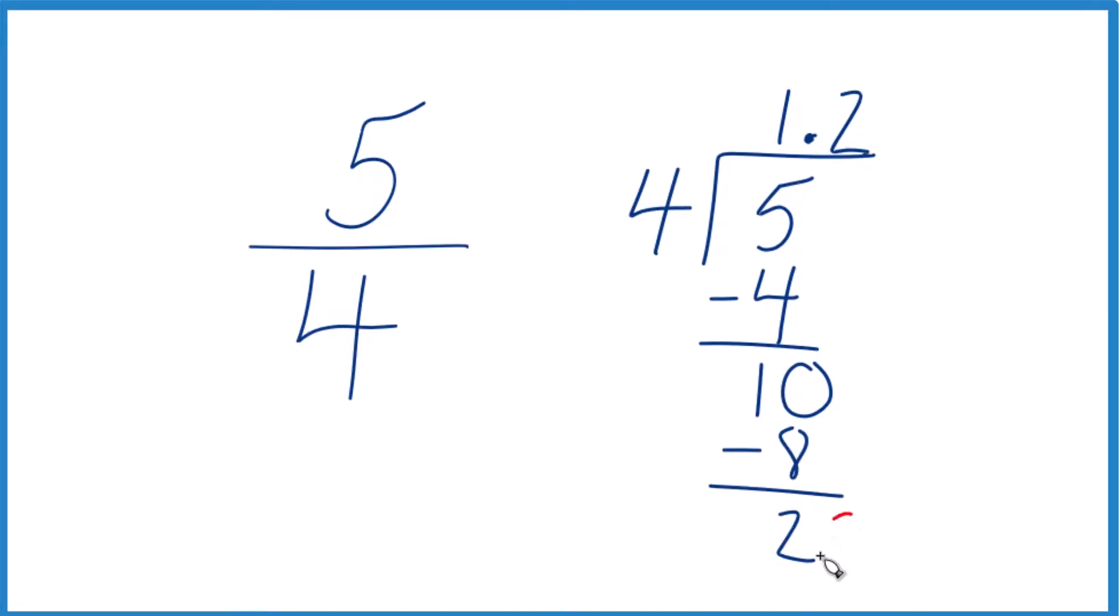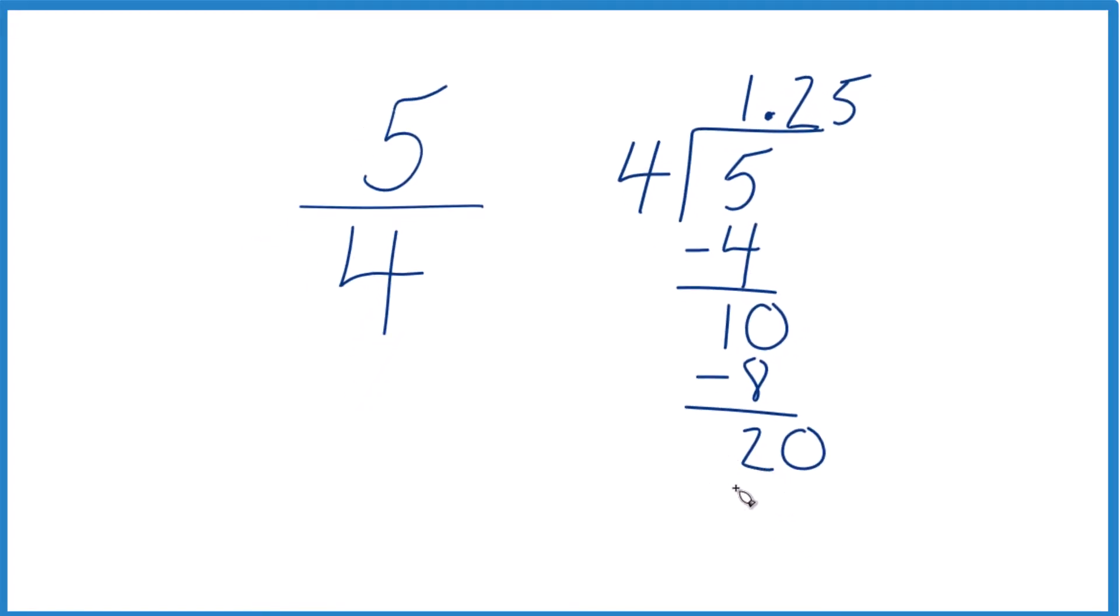We're going to move over 1 and call this 20. 4 times 5, that's 20. So we subtract the 20, and we get remainder is 0 here.